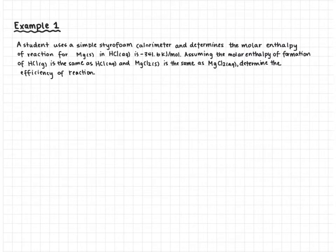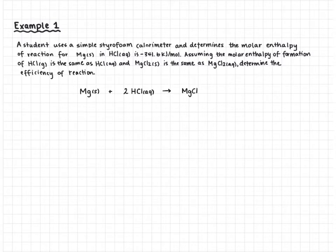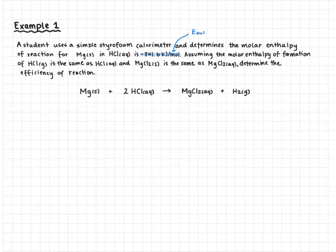The first thing we're going to do is write down our balanced reaction. Magnesium solid reacts with two hydrochloric acids to produce magnesium chloride, which is soluble, and hydrogen gas. We have an experimental molar enthalpy of 341.6 kJ per mole — this is our energy output, the energy we got out of the reaction. To figure out the energy input, we're going to need to use Hess's law.